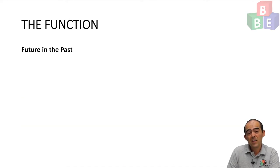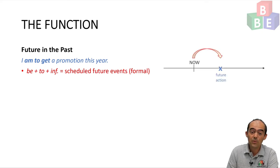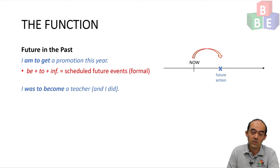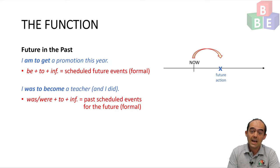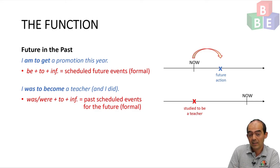There are some other ways we can use future in the past. For example, a general future expression: 'I am to get a promotion this year' — looking at the future from now, using be plus to plus infinitive to talk formally about scheduled future events. In future in the past, I could say 'I was to become a teacher, and I did.' Here I'm using was or were plus to plus infinitive to talk about past scheduled events for the future — formally — and these events did happen. For example, in the past I studied to be a teacher, so I was to become a teacher, and then later, still in the past, I did become a teacher.